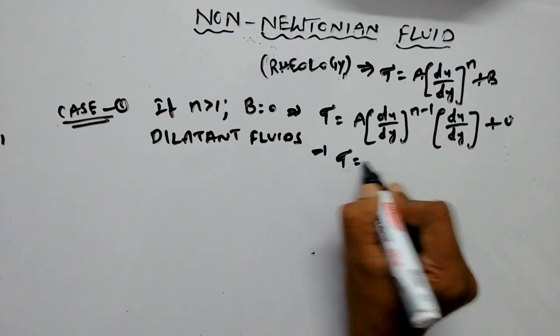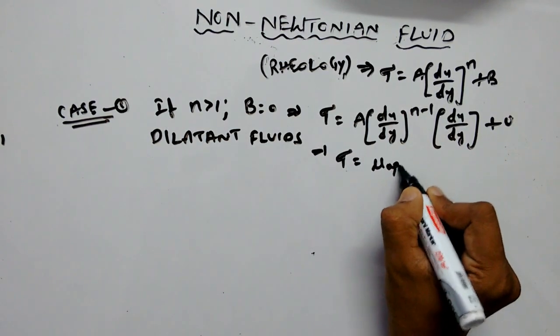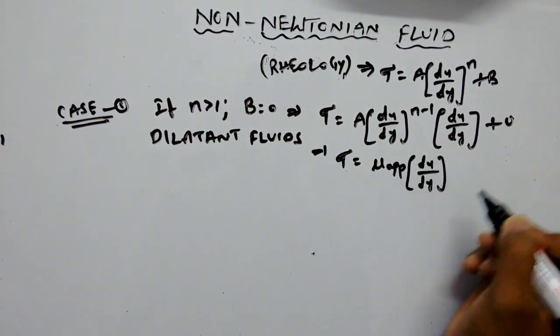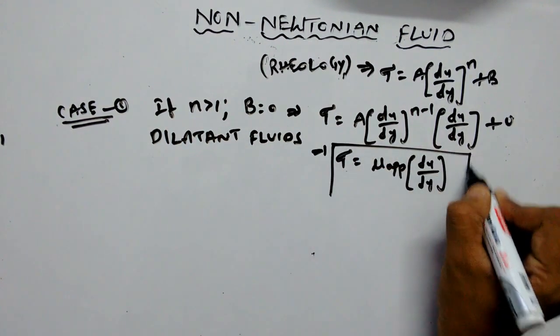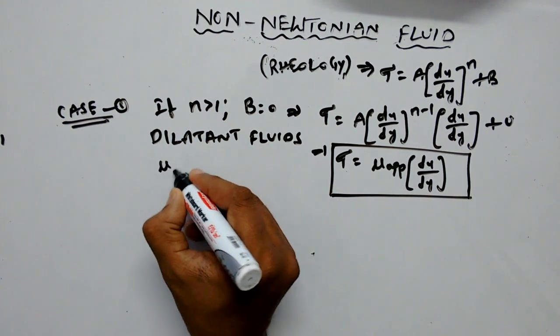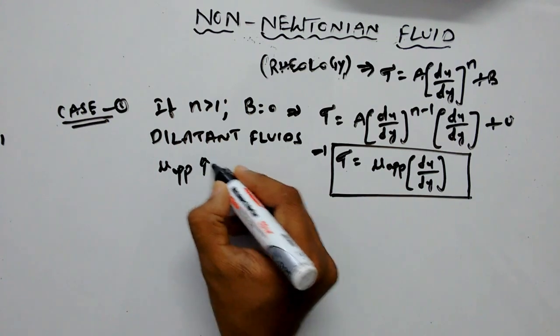The same equation can be written as apparent viscosity into du by dy. This apparent viscosity for a dilatant fluid increases with increasing shear strain.